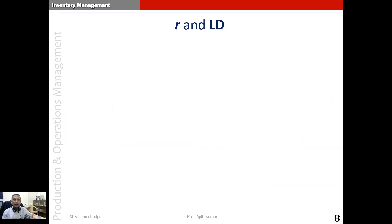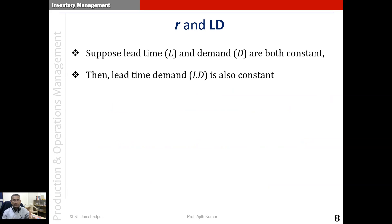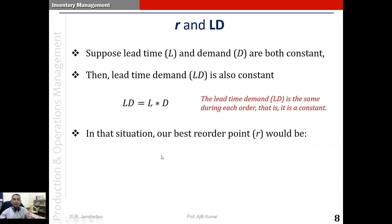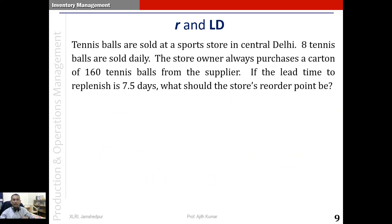First, we look at the relationship between the reorder point and lead time demand. Suppose both lead time and demand are constant. Then the lead time demand would also be a constant, meaning the lead time demand would be the same across the different order cycles. In such a situation, we can compute the lead time demand as just the product of lead time and demand, and our best reorder point would simply be the lead time demand itself: R equals LD equals L times D. When we set the reorder point in this manner, we will neither have excess inventory nor a stockout.